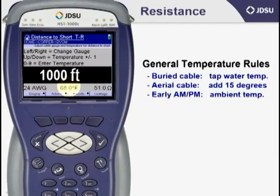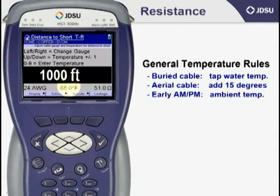A couple of rules of thumb that I use for temperature are shown here. Buried cable is generally tap water temperature. Add 15 degrees to that for aerial cable. If it's early in the morning or later in the evening, set your cable gauge at the ambient temperature.